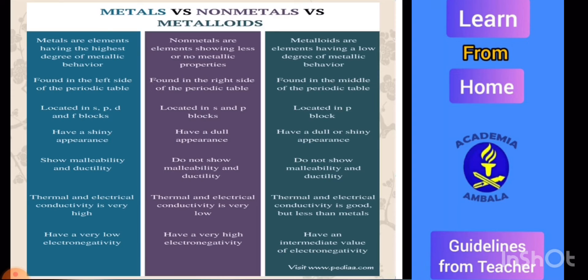Metals are located in s block, p block, d block, and f blocks. Our periodic table is divided into four blocks: s, p, d, and f. But non-metals are located only in s and p blocks, and metalloids are only in p block.